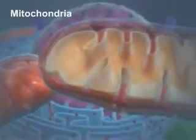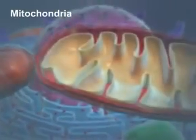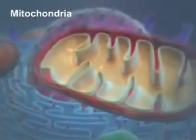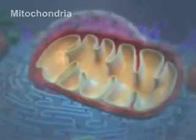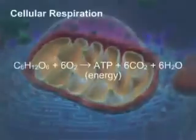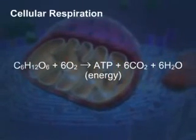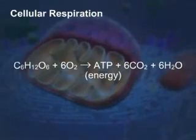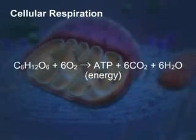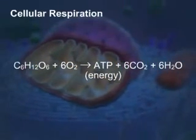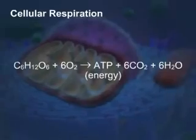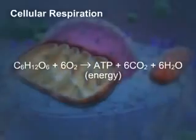Outside the nucleus are the organelles. The mitochondria is the site where glucose is converted to ATP, which the cells use for energy. The equation illustrates how mitochondria convert glucose into ATP, carbon dioxide, and water — a process called cellular respiration.